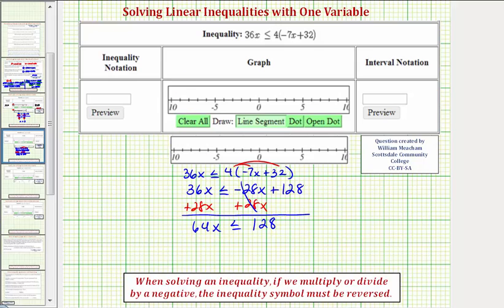And now for our last step, to solve for x, we divide both sides by 64. 64 divided by 64 simplifies to one. One times x is just x, so we have x is less than or equal to 128 divided by 64 is equal to positive two.